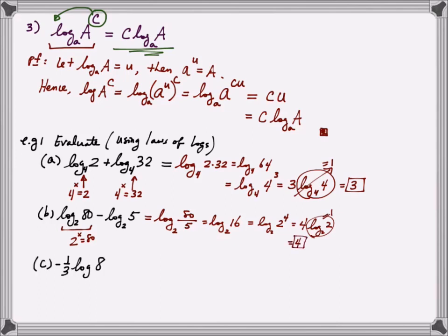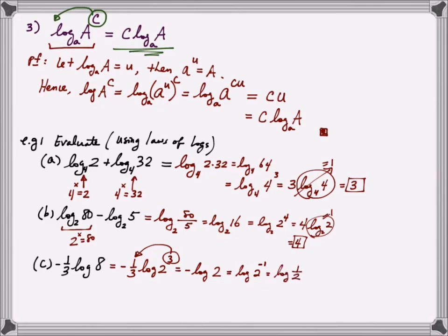One last example: negative one-third times log base 10 of 8. Remember, if no base is written it is assumed to be base 10, the common log. I can write this as negative one-third times log of 2 to the third. Bringing the 3 down and combining with the negative one-third gives negative log base 10 of 2. Since log of 2 is not something known exactly, you would use a calculator, or think of it as log of 2 to the negative 1, which is log of one-half, giving approximately negative 0.301.